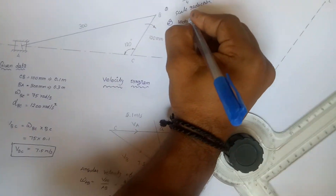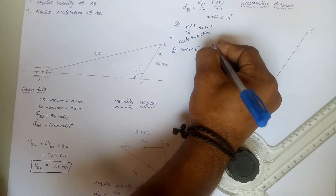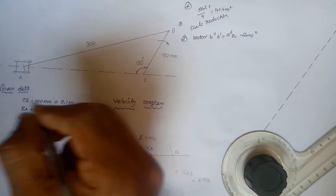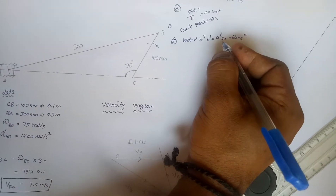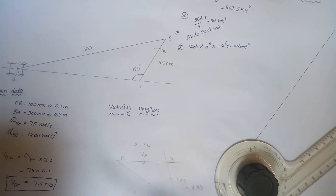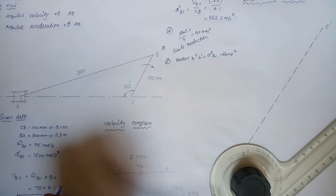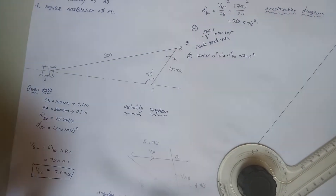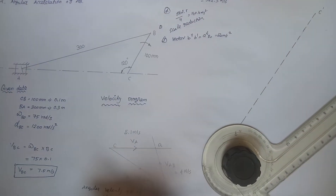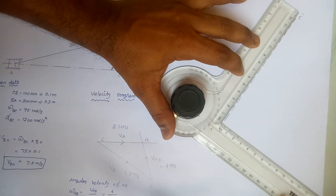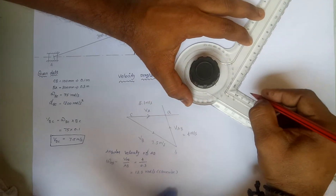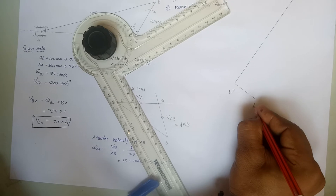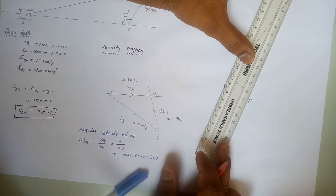The vector P double dash B dash equals A tangential BC equal to 120 meters per second squared. So the vector P double dash B is equal to 120 meters per second squared. This point is called B dash. Join B and C.